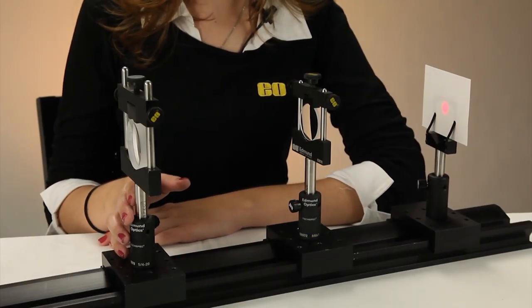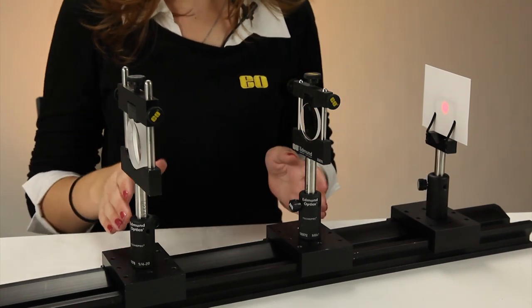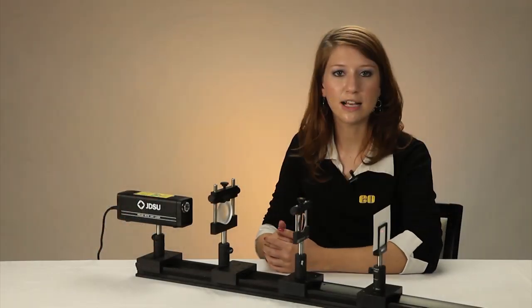If you're interested in building your own beam expander, one of the best designs for laser expansion is the Galilean design. This design utilizes two lenses, one positive and one negative, at a distance equal to the sum of their focal length, as you see here.